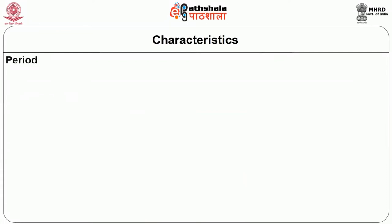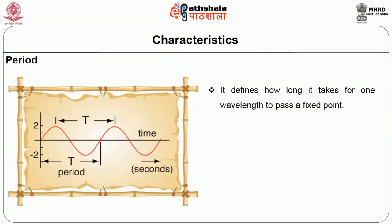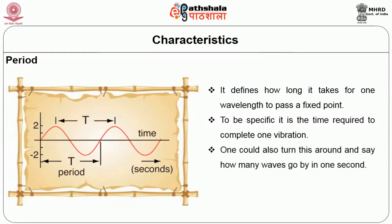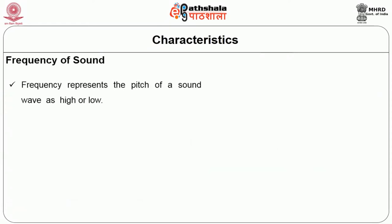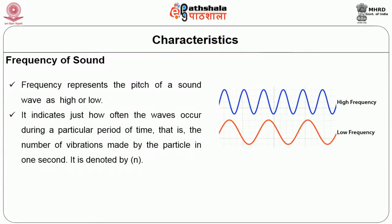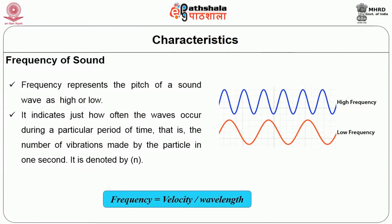The third characteristic is period. It defines how long it takes for one wavelength to pass a fixed point; to be specific, it is the time required to complete one vibration. One could also turn this around and say how many waves go by in one second. The symbol used is T and the unit is seconds. The next characteristic is frequency of sound. Scientifically speaking, frequency represents the pitch of a sound wave as high or low. It indicates just how often the waves occur during a particular period of time, that is the number of vibrations made by the particle in one second. It is denoted by lowercase n. Frequency is equal to the velocity divided by the wavelength.